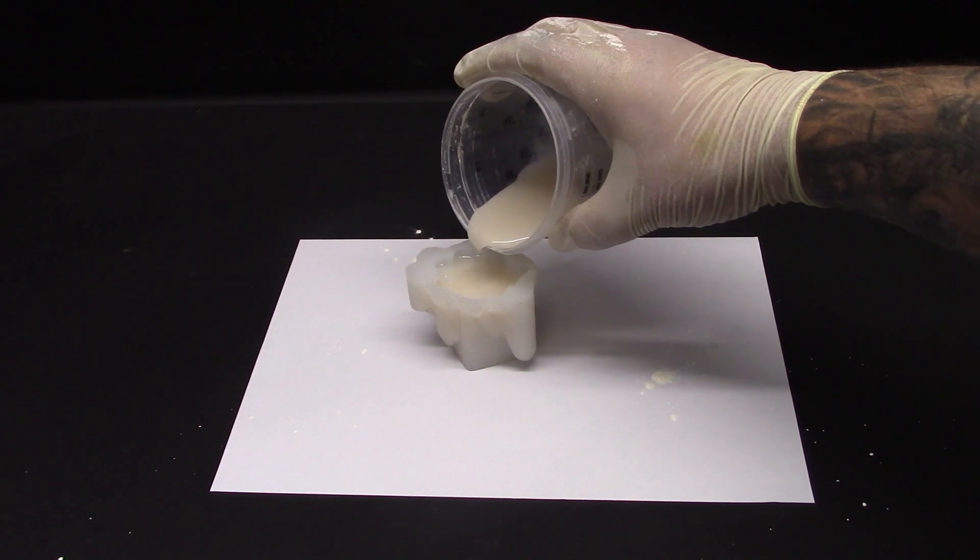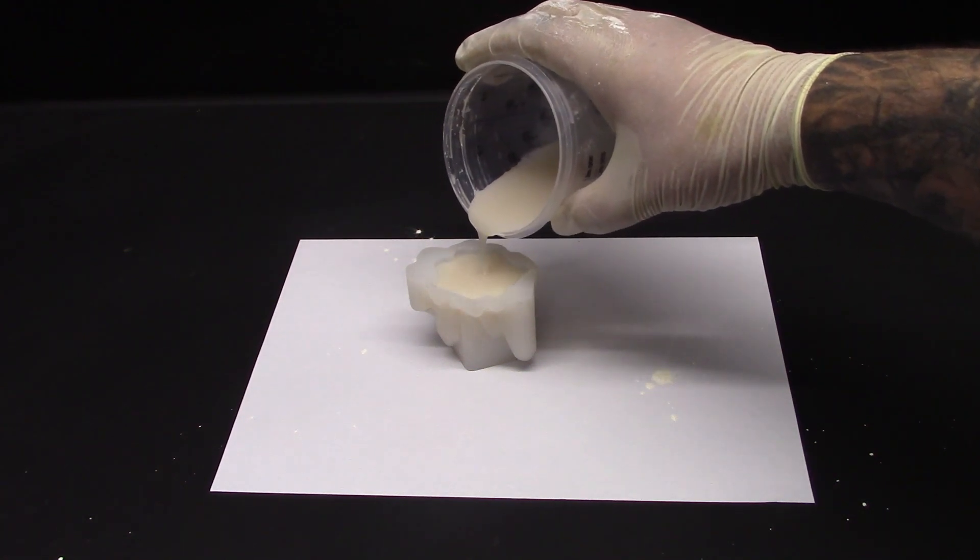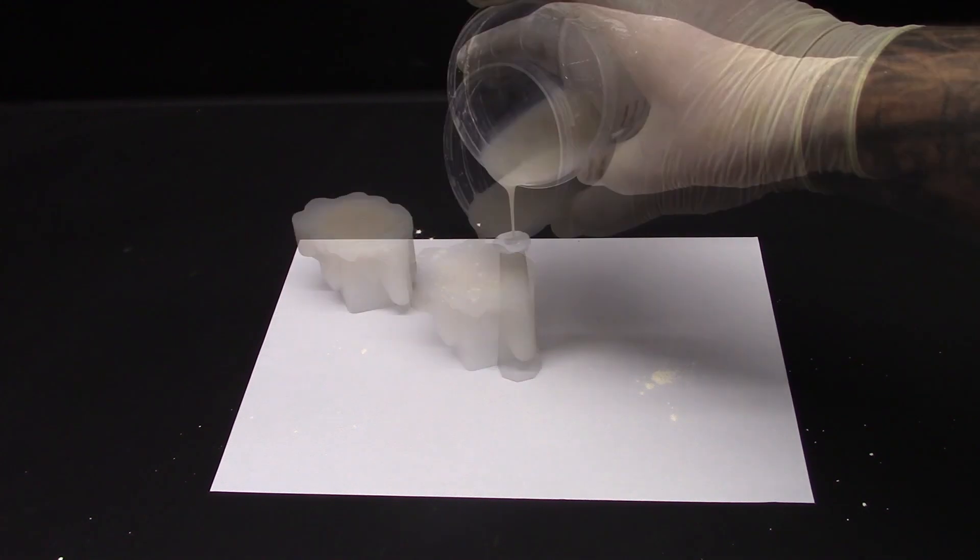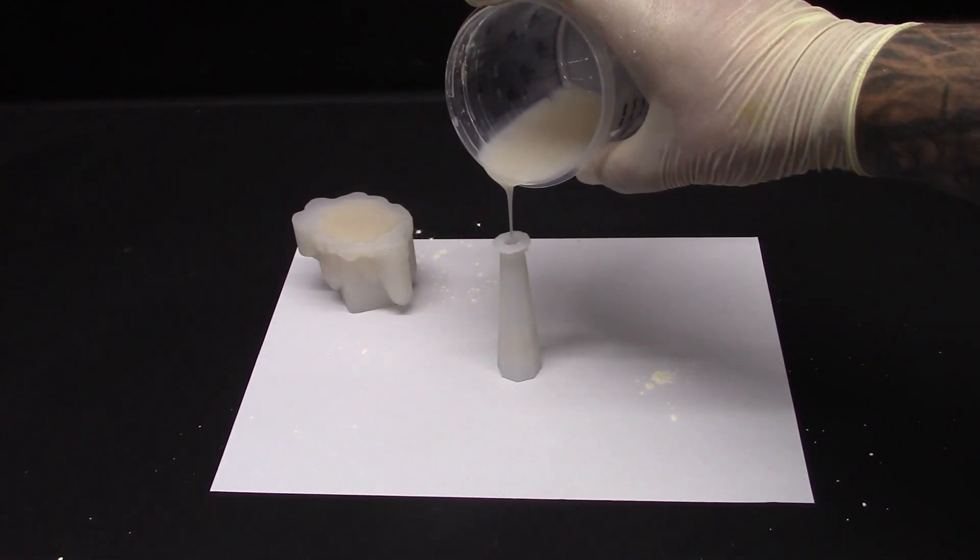For more professional level castings with no risk of tiny trapped air bubbles, you may want to use a degassing chamber to remove all air from the resin first.